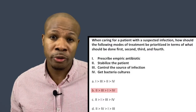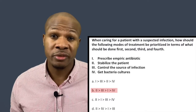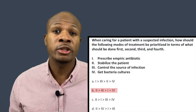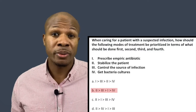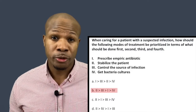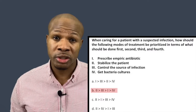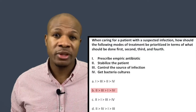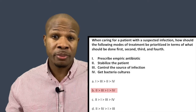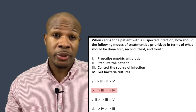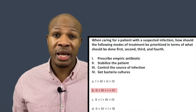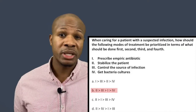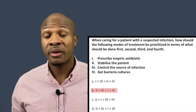Answer B says: stabilize the patient, control the source of infection, then prescribe empiric antibiotics — that's correct. Knowing the source of infection gives you insight into what bacteria could be causing it, which allows you to choose proper empiric antibiotics to combat the infection. Once you've prescribed empiric antibiotics, you want to get blood cultures to verify they're the right choice. Once cultures come back, you'll know whether to continue the empiric antibiotics or discontinue them and choose antibiotics that actually cover the bacteria shown on the cultures.